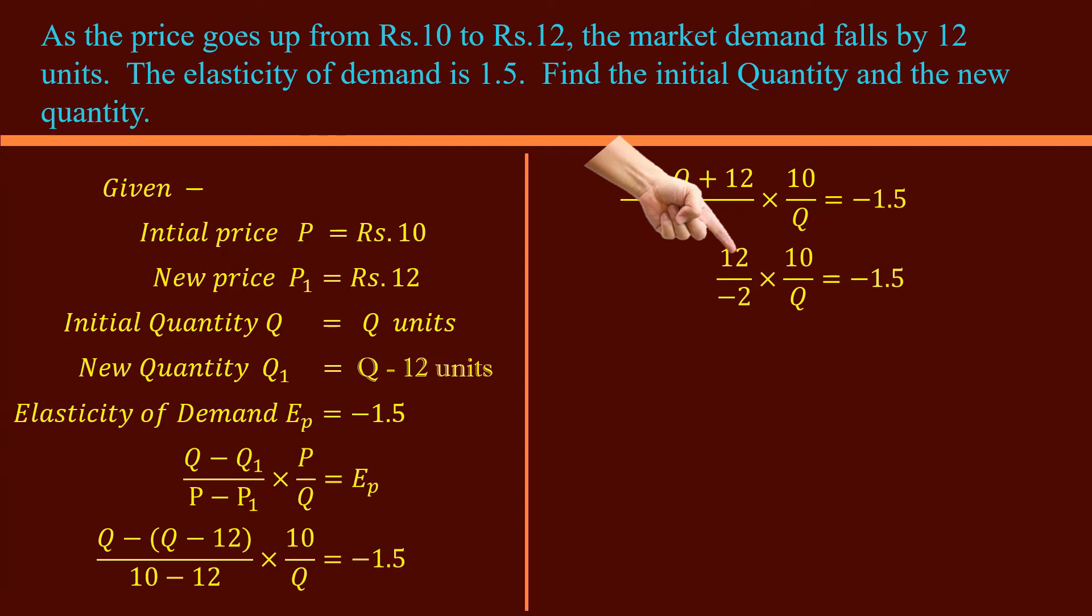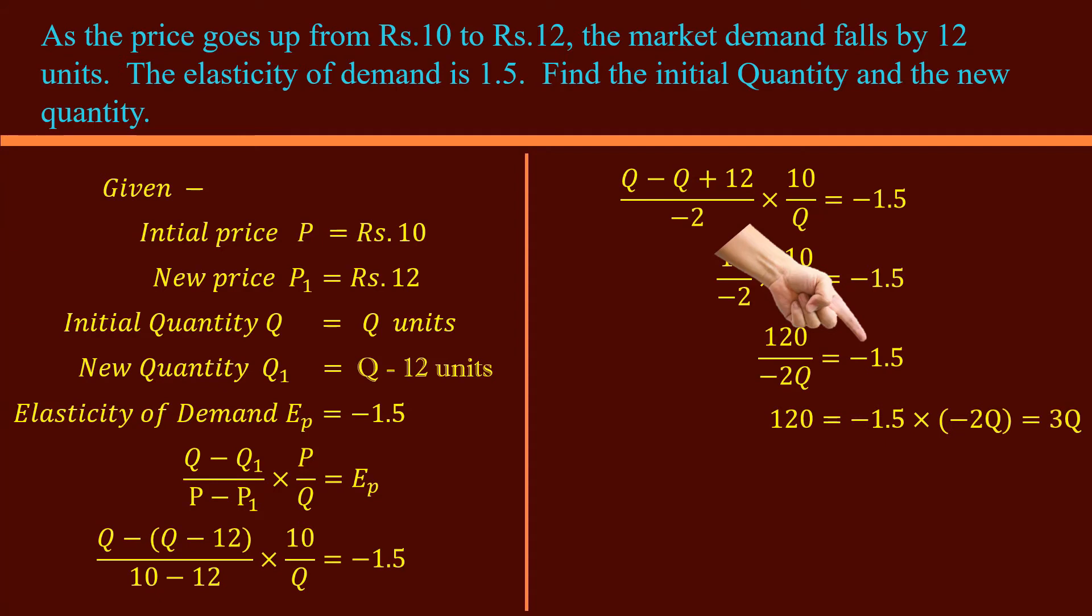12 divided by minus 2, 10 by Q equal to negative 1.5. 120 over negative 2Q equal to negative 1.5. Take negative 2Q to the right hand side. 120 equal to negative 1.5 multiplied by negative 2Q, 3Q. See, negative 2Q is shown within brackets. It's a good practice when two signs occur consecutively.